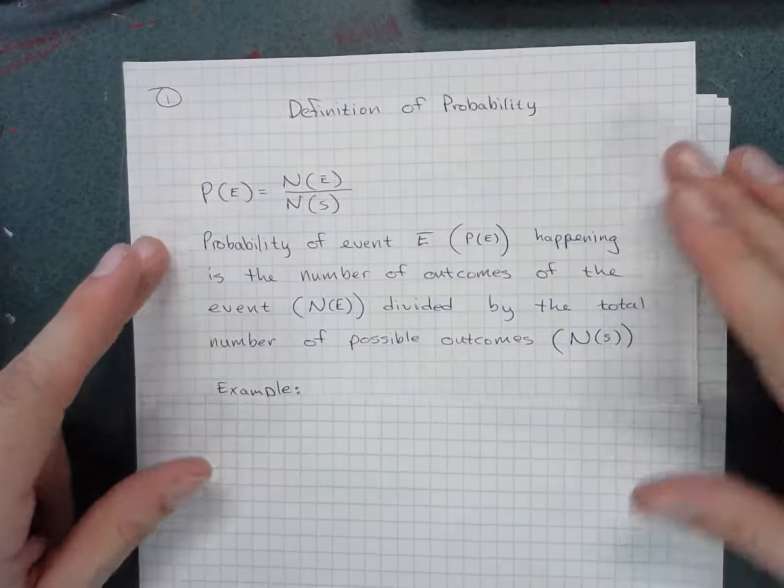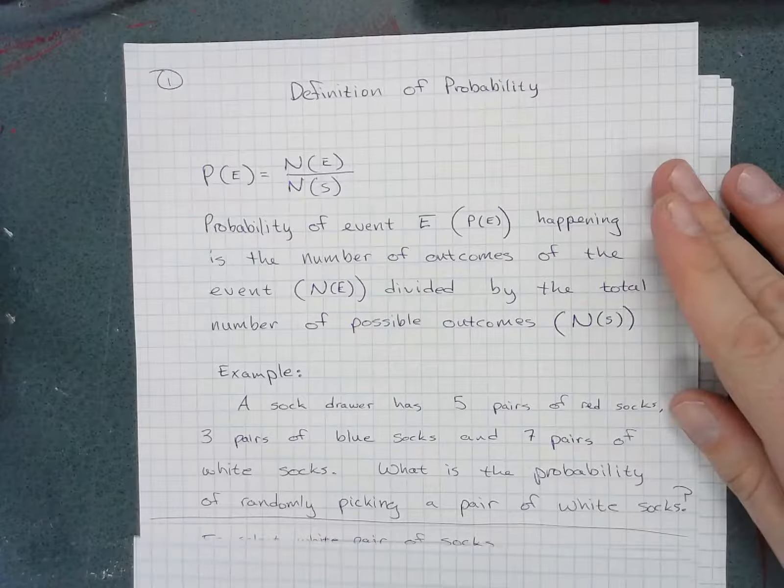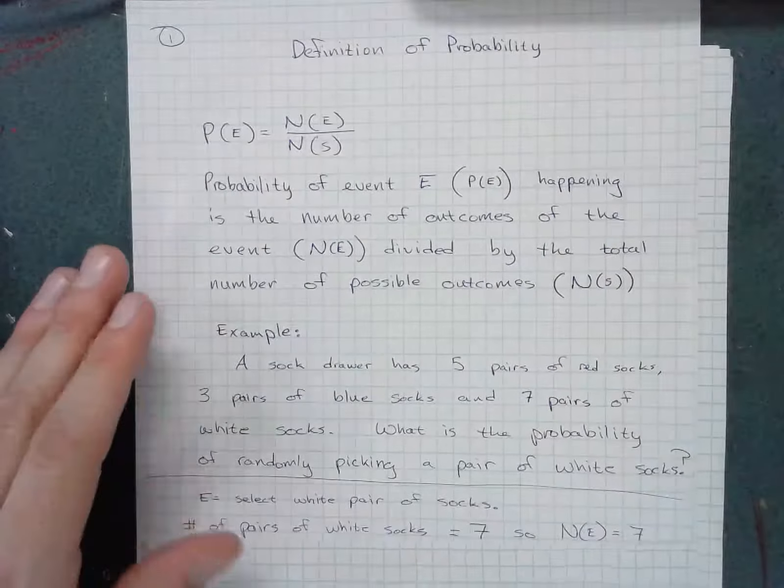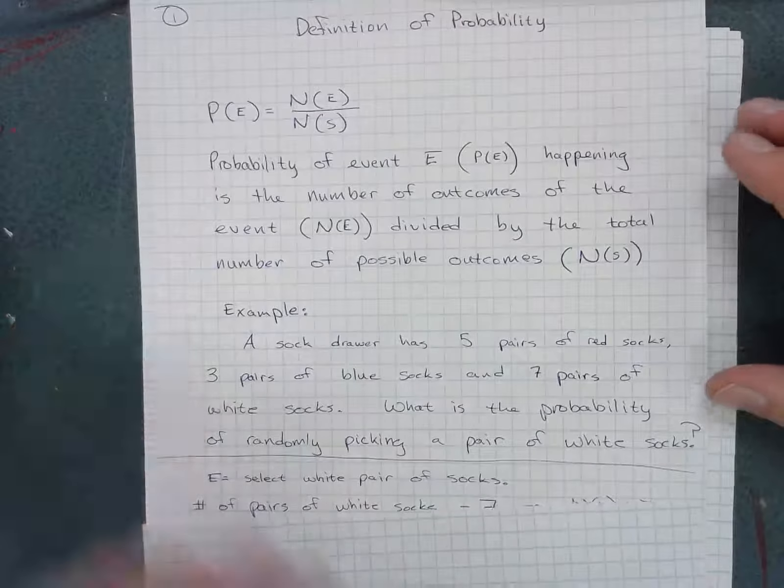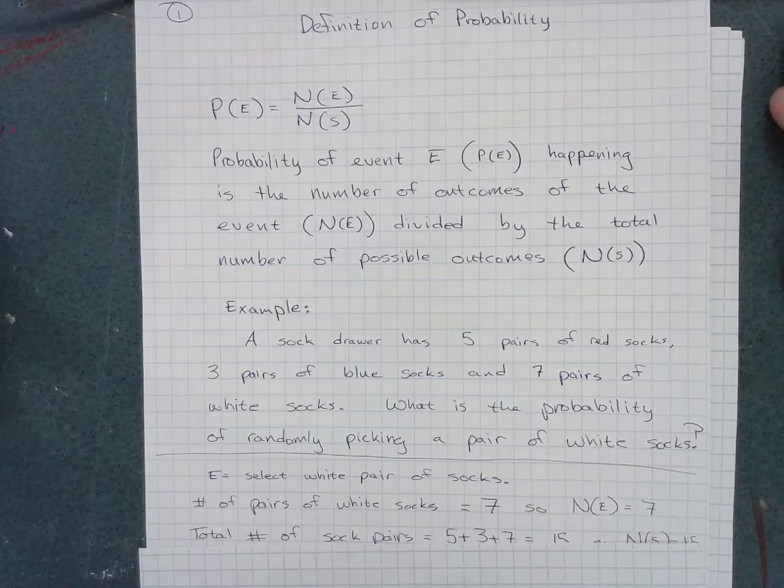Let's take a look at a sample here. It's a pretty classic probability scenario. We have a sock drawer with five pairs of red socks,